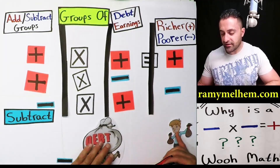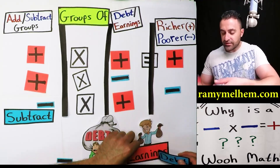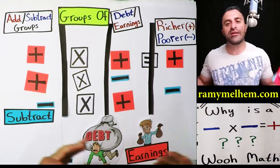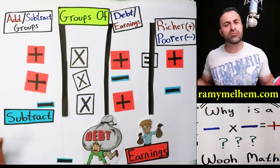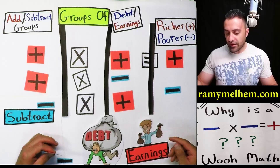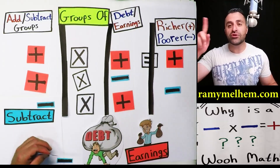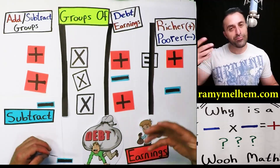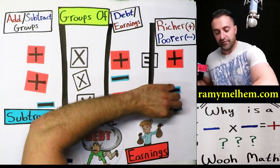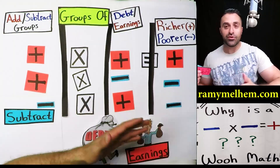Are we looking at this guy or this guy? The guy with the earnings. Subtract his earnings — either steal it or spend it. If he spends his earnings, is he going to get richer or poorer? He's going to get poorer. A negative times a positive is a negative answer — you get poorer.